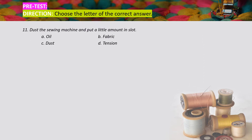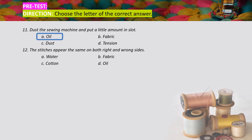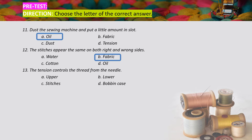Number eleven: the sewing machine should have a little amount in its slots — A) oil, B) fabric, C) dust, D) tension. The correct answer is letter A, oil. Number twelve: the stitches operate the same on both right and wrong sides — the correct answer is letter B, fabric. Number thirteen: the tension that controls the thread from the needle is — A) upper, B) lower, C) stitches, D) bobbin case. The correct answer is letter A, upper tension.